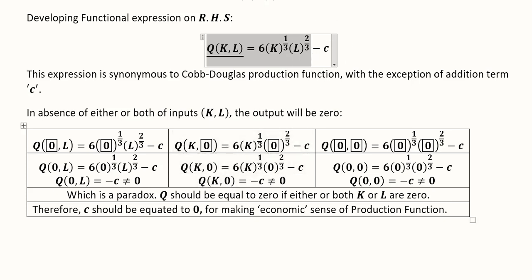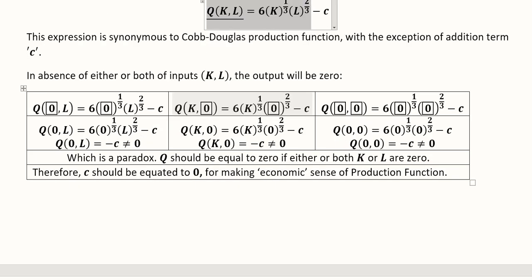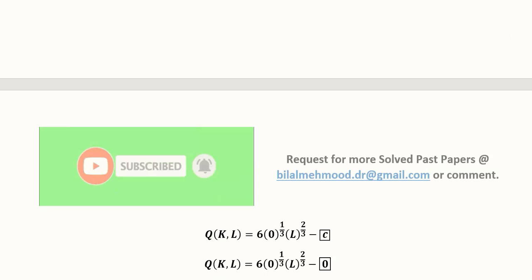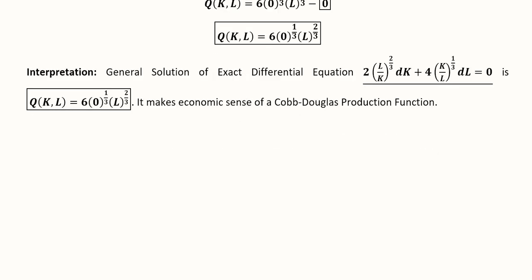So if it is equal to zero then we can get a Cobb-Douglas production function which is logically and economically meaningful. So this is already discussed in the video. You can refer back to that.